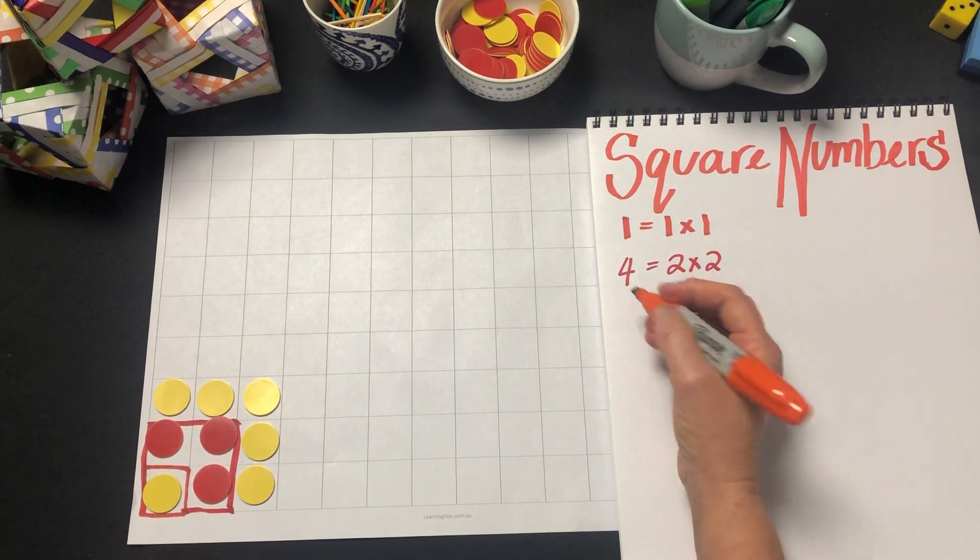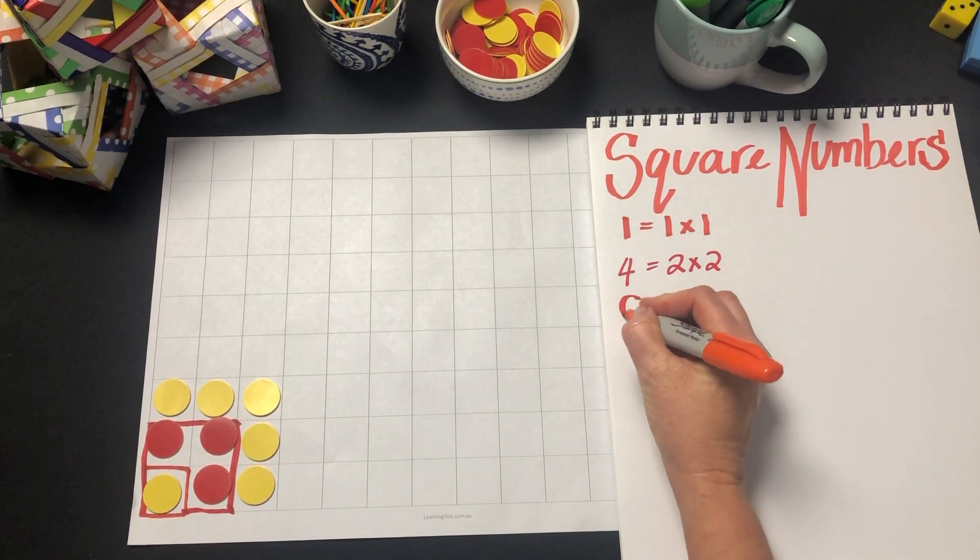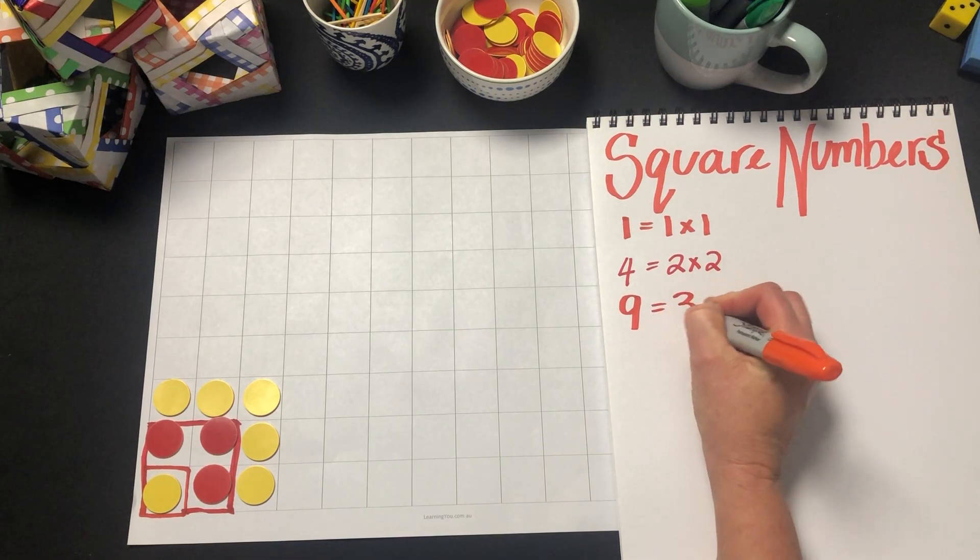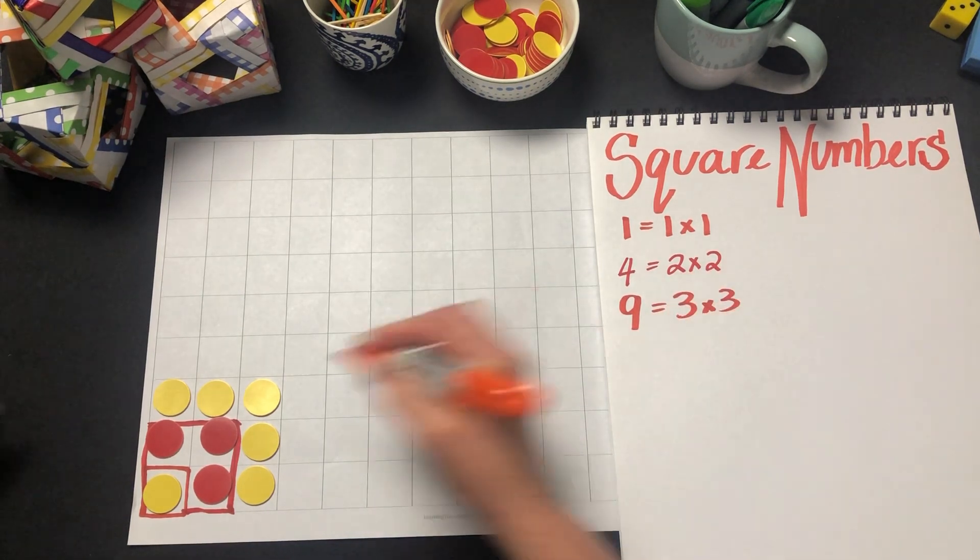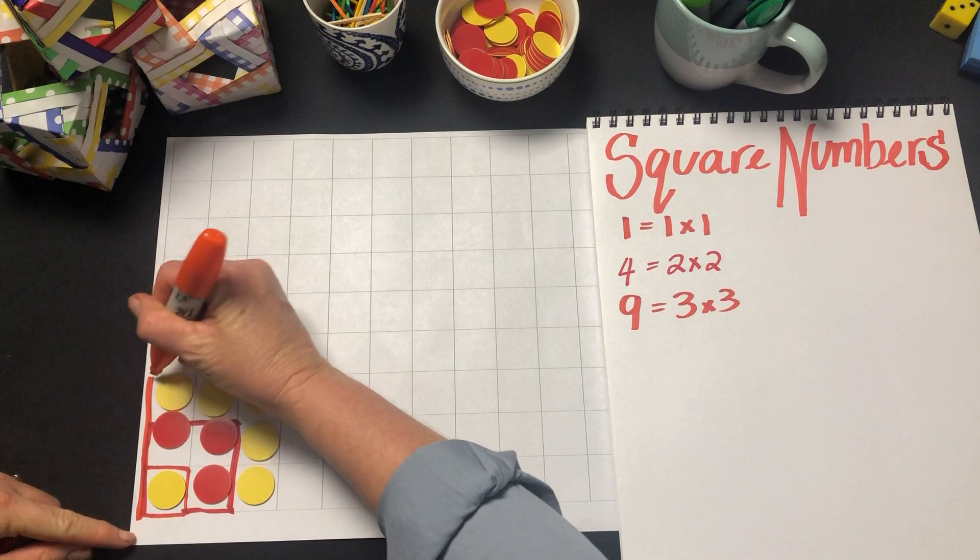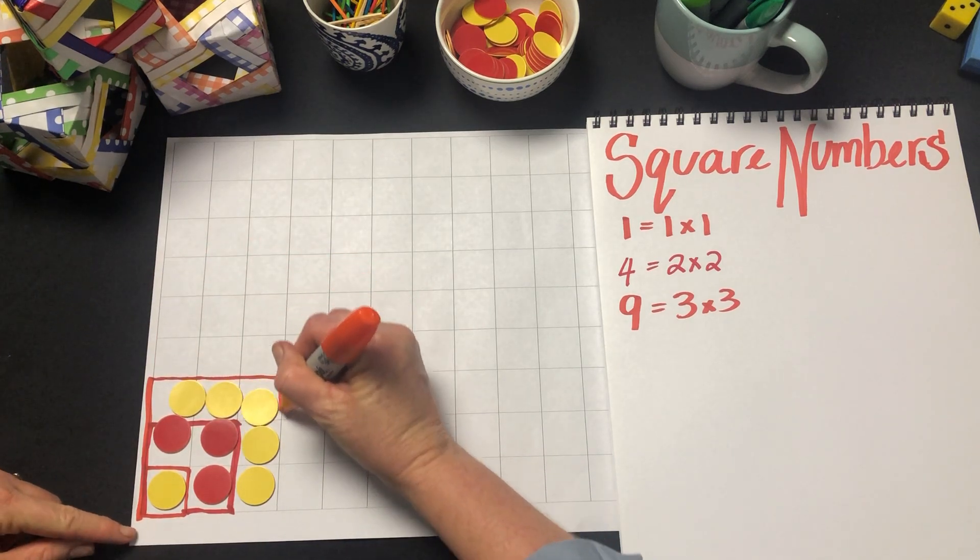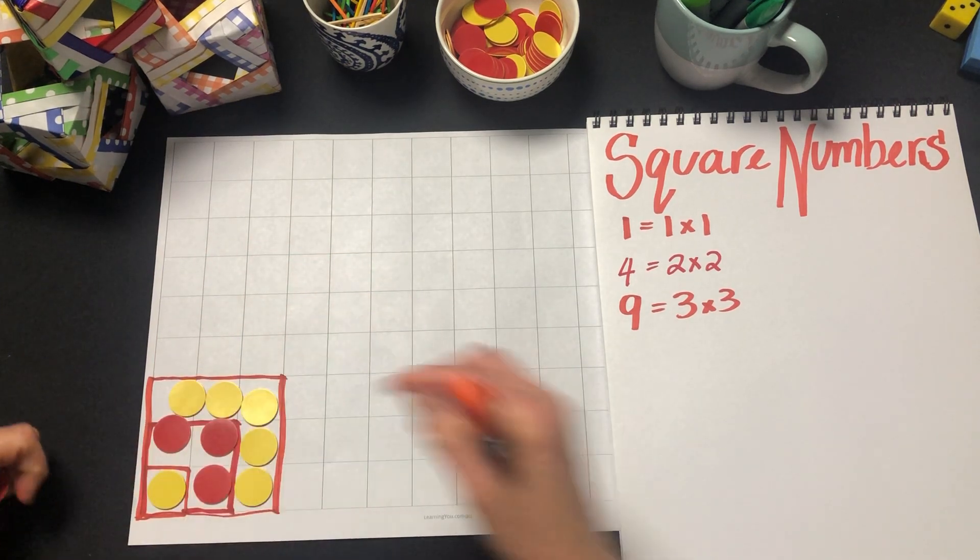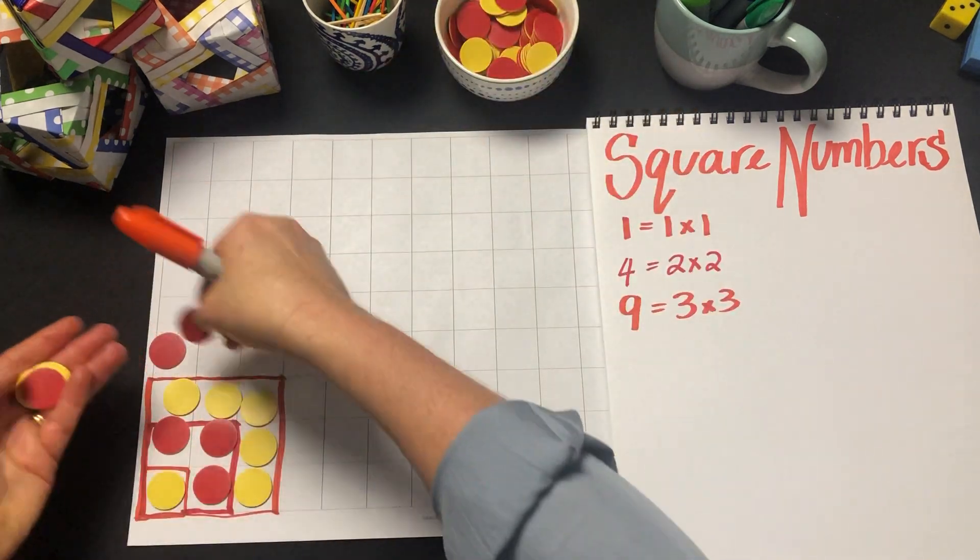we can see that 9 is a square number and it has a side of 3, and so on as we go.